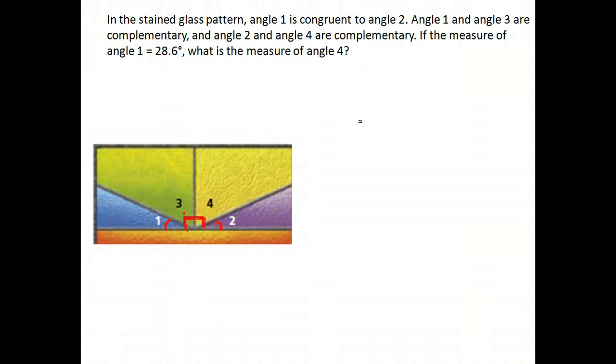If the measure of angle 1 is 28.6, I'm going to go ahead and put that in. Angle 1 is 28.6. I'm also going to make angle 2, 28.6, because in the information I was told those are congruent. They're exactly the same size.